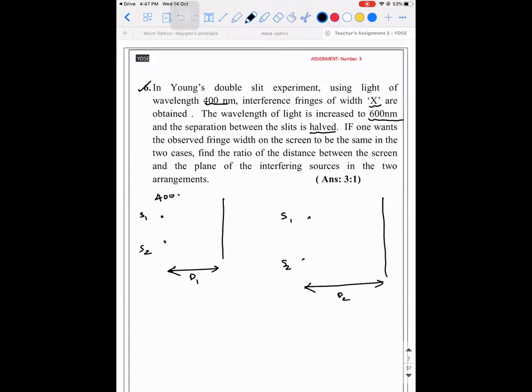In the first arrangement, 400 nm wavelength is used. In the second, 600 nm is used. In the first case, if the distance of separation between the slits is d, in the second case it is d by 2.